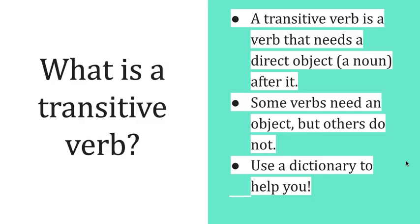What is a transitive verb? A transitive verb is a verb that needs a direct object after it. Some verbs need an object after, but others do not — that is the difference between a transitive verb and an intransitive verb. Starting with 'T', transitive: you need a direct object after a transitive verb. If you're not sure, use a dictionary to help you find this information. Transitive verbs need direct objects.